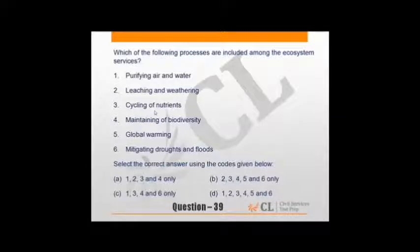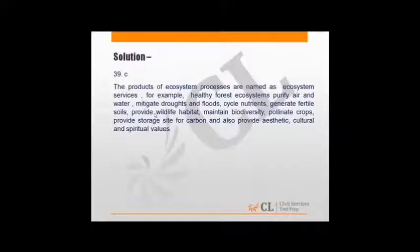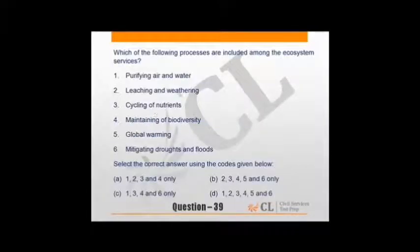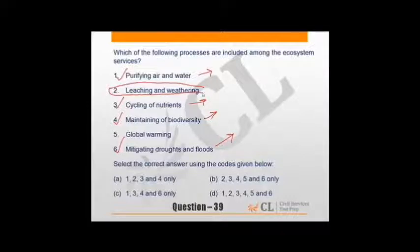Which processes are included among ecosystem services? Not a very difficult question but very factual. Such questions generally must not get confused. They seem easy but as they are factual, sometimes we can miss. From options: purifying air and water, cycling of nutrients, maintaining biodiversity - these can be ecosystem services. Leaching and weathering certainly cannot be, it's not in our hand. Global warming certainly not ecosystem services. So 1, 3, 4, and 6 stand correct.